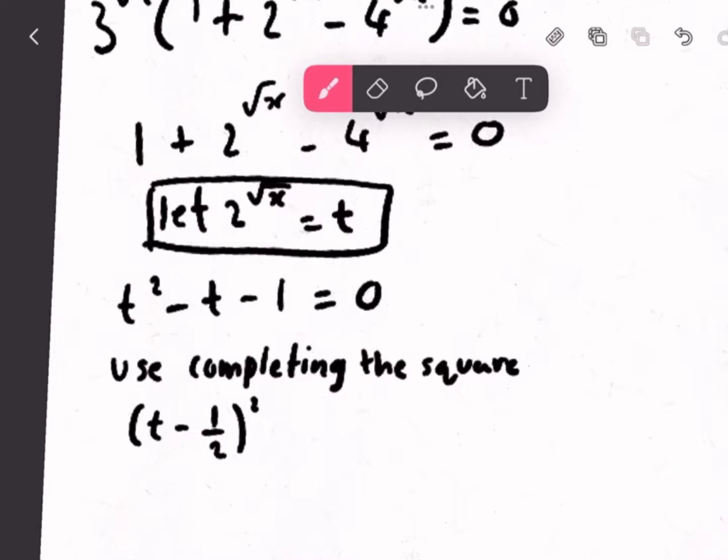So, using completing the square, we should get the answer t minus 1 over 2, so whole squared, equal to 1 plus 1 over 4.